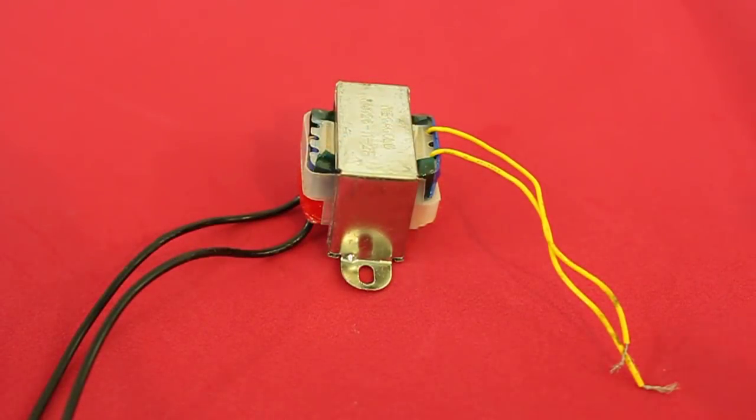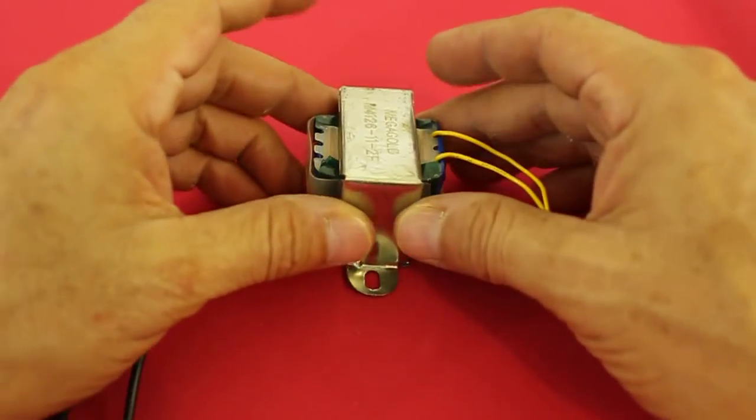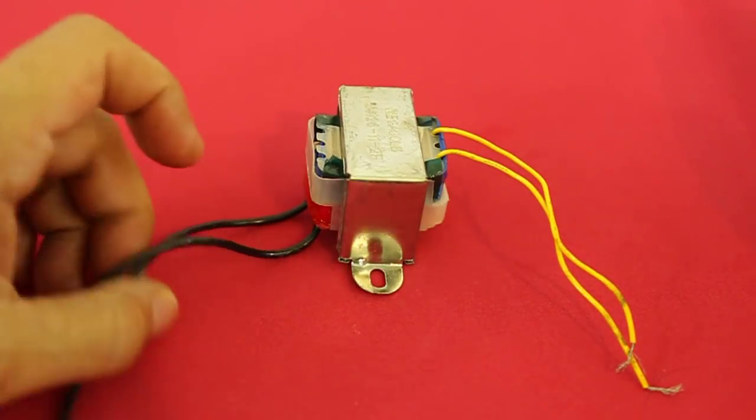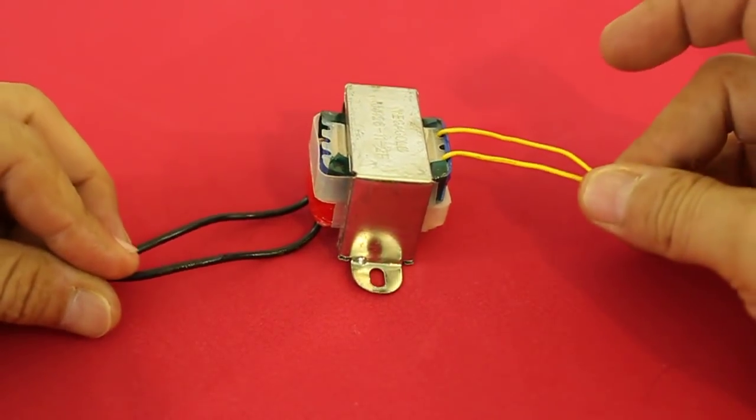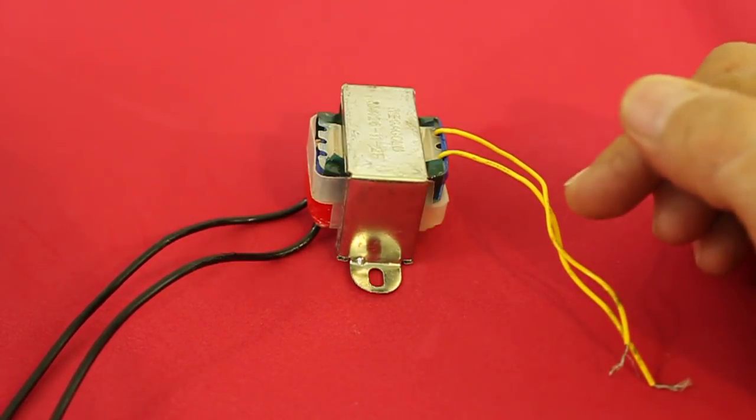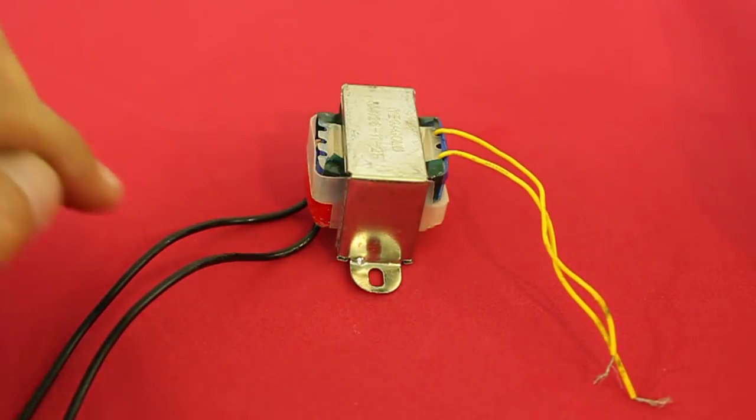The optocoupler can be compared to a transformer. It has an input and an output, and what happens at the output depends on what happens at the input.